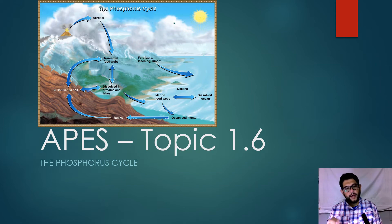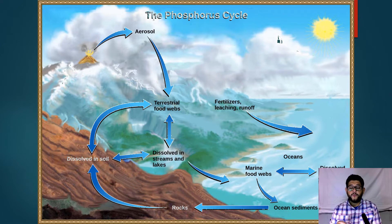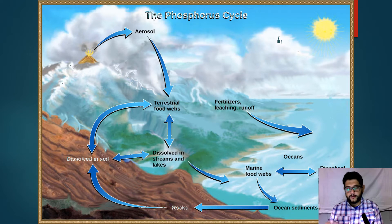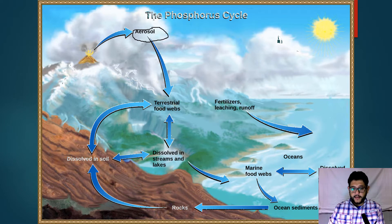If you look at the phosphorous cycle, you see it dissolved in streams, dissolved in the soil, in the rocks, the oceans, the marine food web, sediments, fertilizers, and terrestrial food webs. You also see the word 'aerosol' — an aerosol is not a gas. This is the one cycle that lacks an atmospheric component.